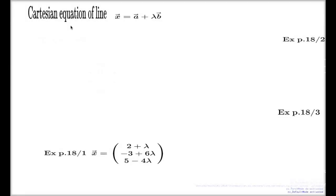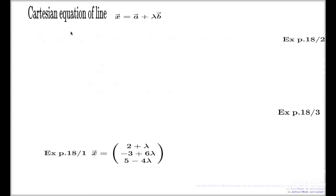Here are my general thoughts behind the Cartesian equation of a line in Rn. When you start with the parametric equation of a line, if you want to convert this into the Cartesian equation, first you need to have components of your vectors. I'm going to give you a sort of general argument in the context of the general Rn space, general n-dimensional space.